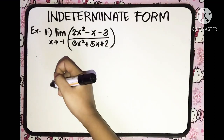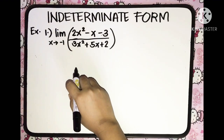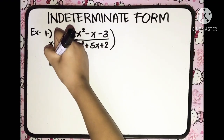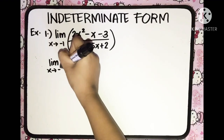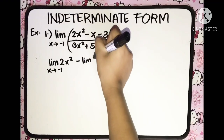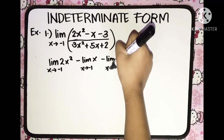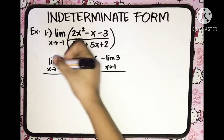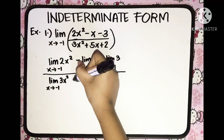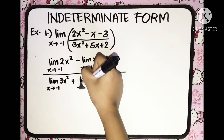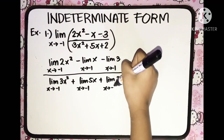So applying the theorems from our previous lesson, this is the limit of a quotient. We'll distribute the limit into the numerator and denominator separately. We'll have the limit of 2x squared as x approaches negative 1, minus the limit of x as x approaches negative 1, minus the limit of 3 as x approaches negative 1, all over the limit of 3x squared, plus the limit of 5x, plus the limit of 2, all as x approaches negative 1.